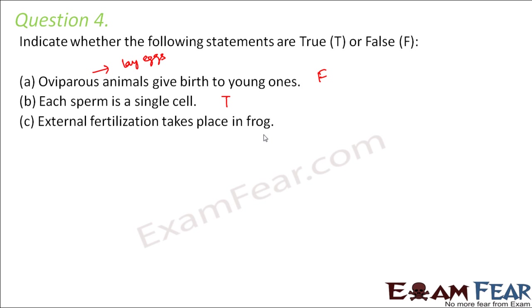External fertilization takes place in frog — that is true. In frogs, the male releases sperms in water, the female releases eggs in water, and then the fusion happens in water. That is external fertilization.